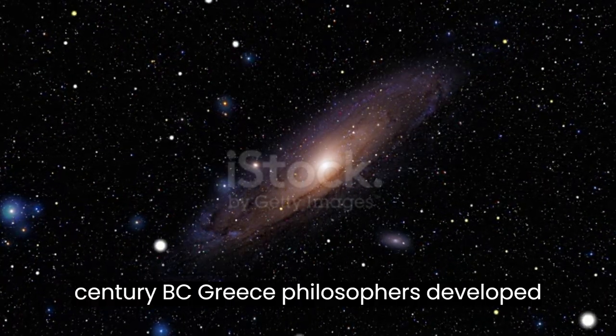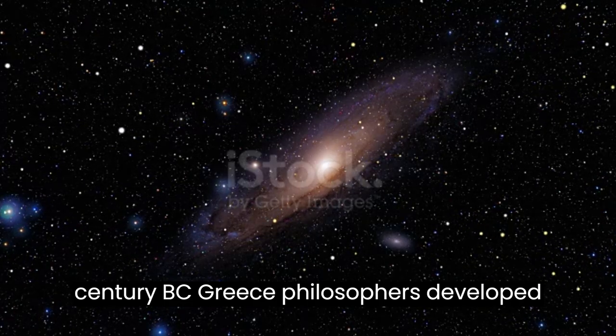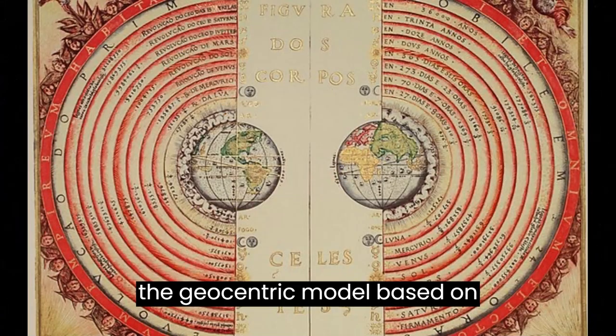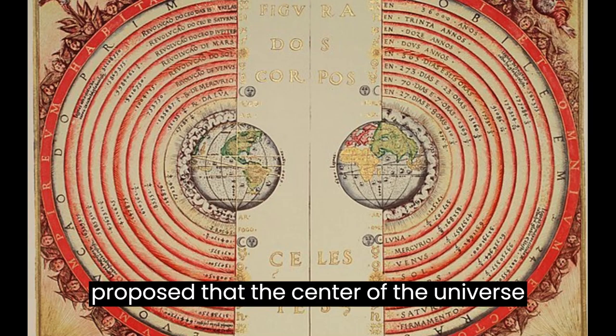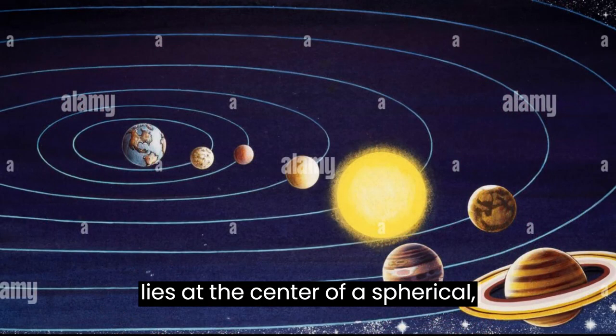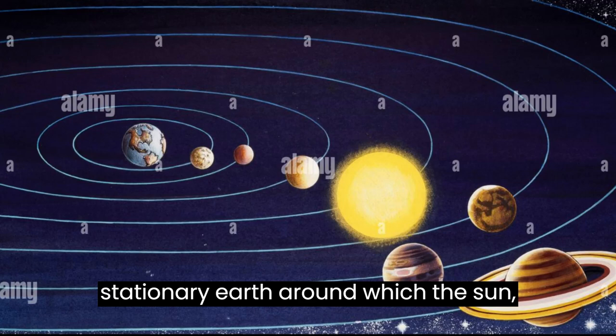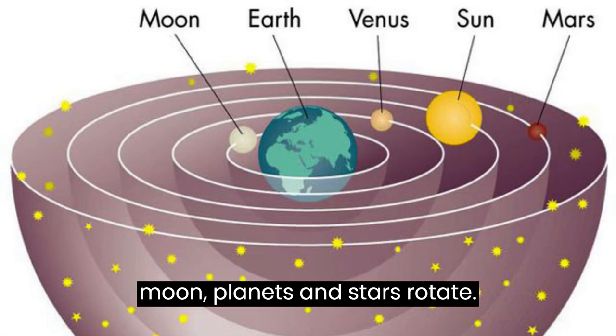In the 4th century BC Greece, philosophers developed the geocentric model based on astronomical observation. This model proposed that the center of the universe lies at the center of a spherical, stationary earth, around which the sun, moon, planets, and stars rotate.